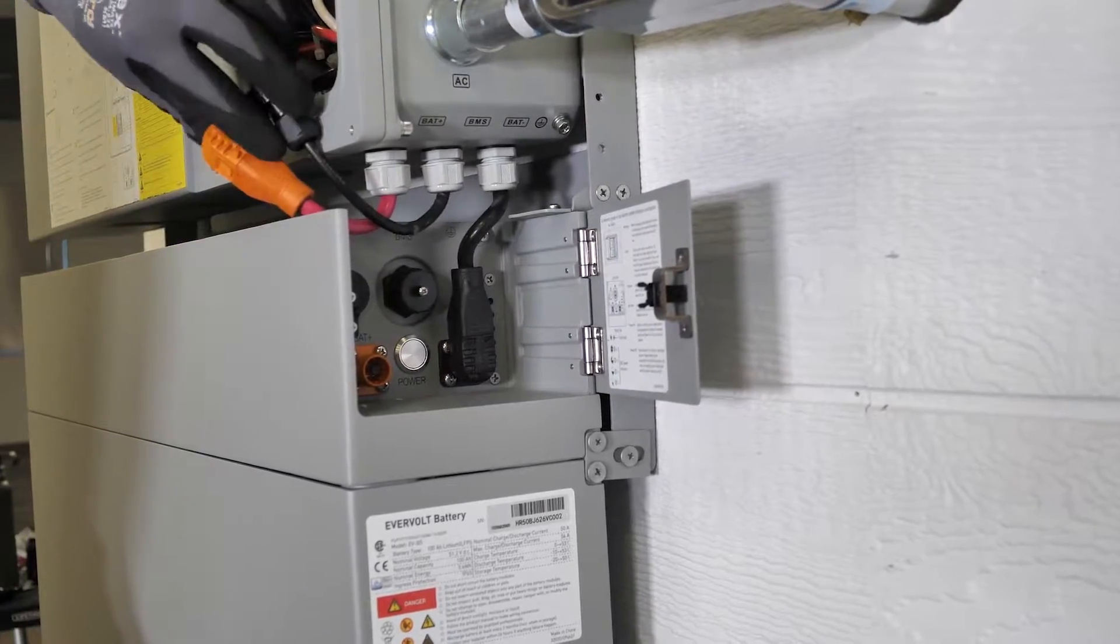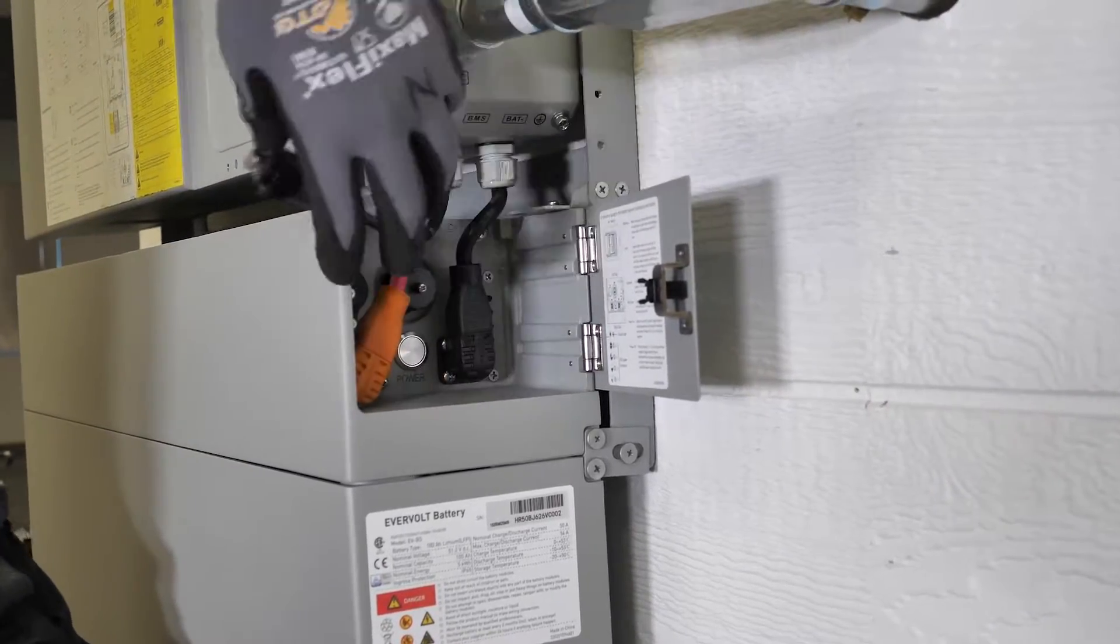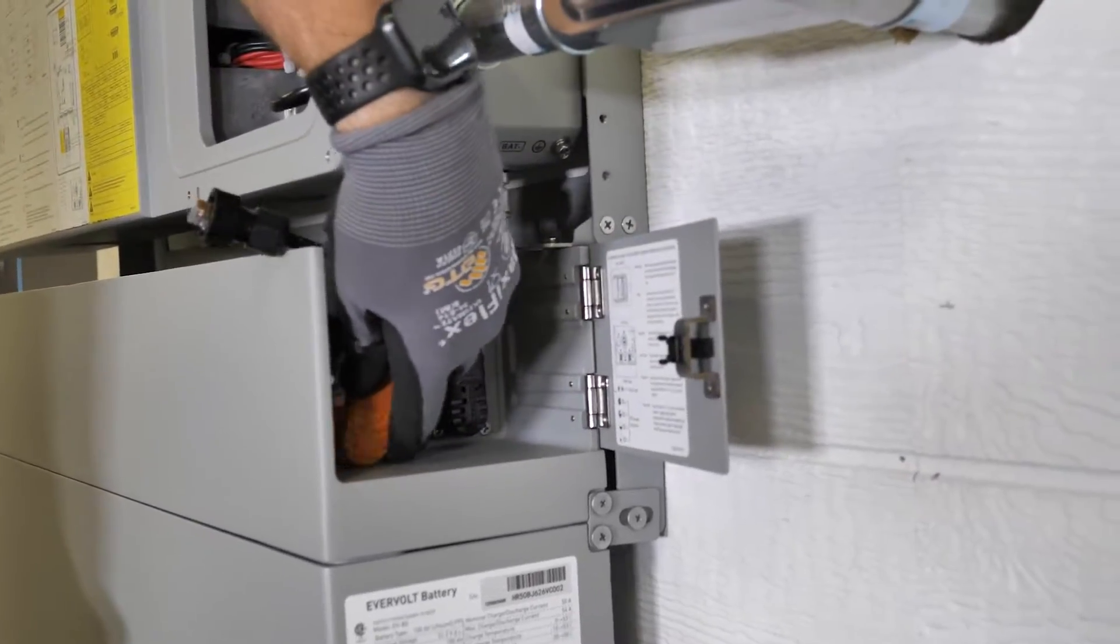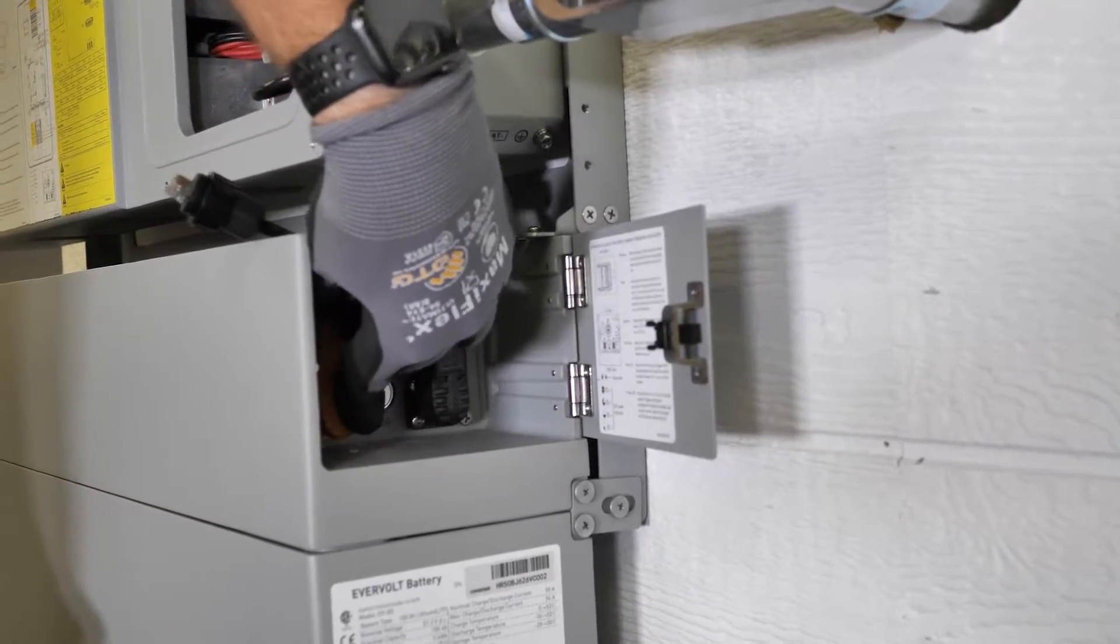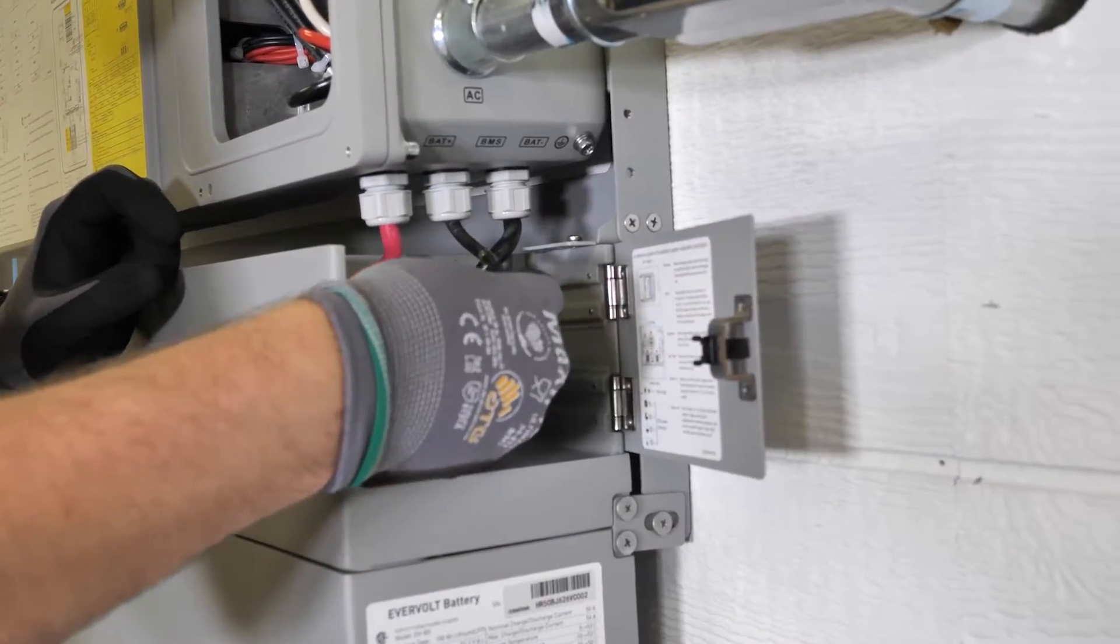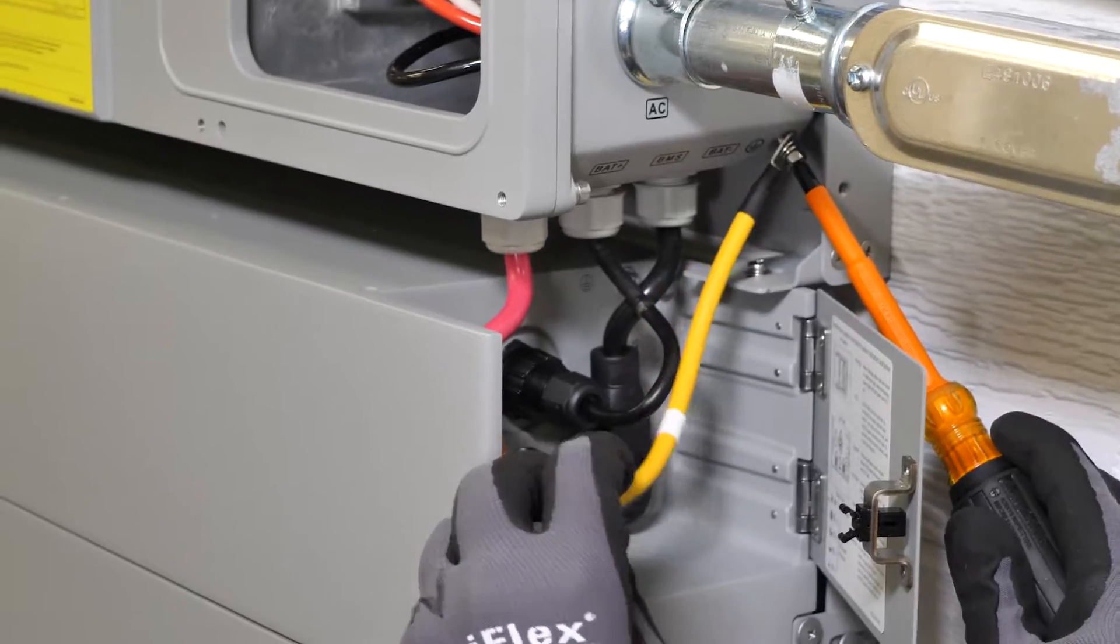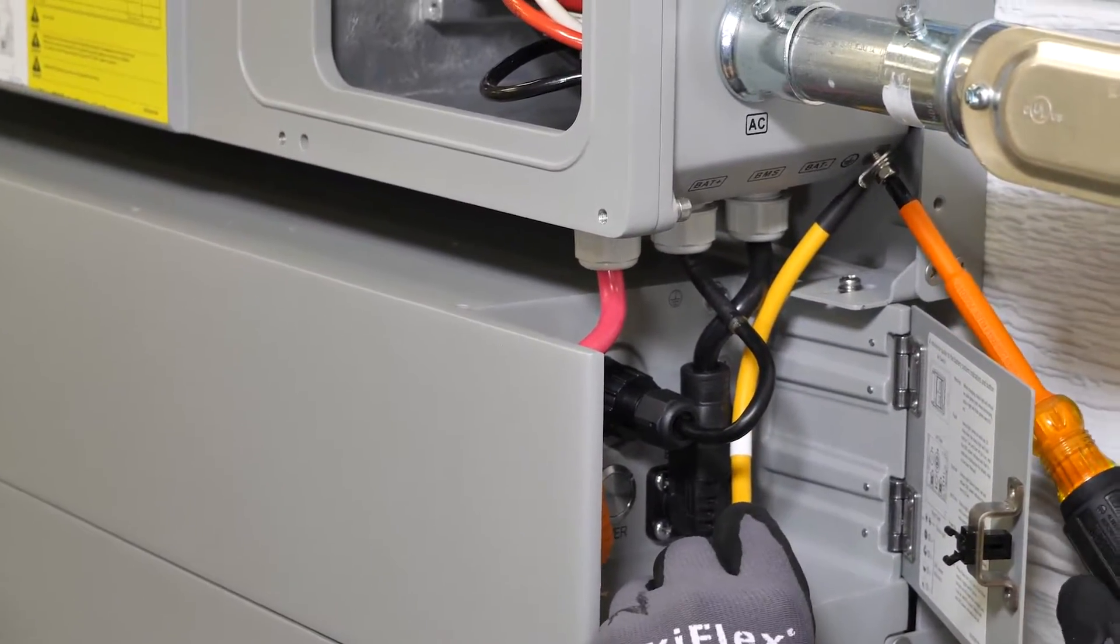Connect the battery conductors from the inverter to the BMS. Finally, connect your grounding wire between the inverter and the BMS.